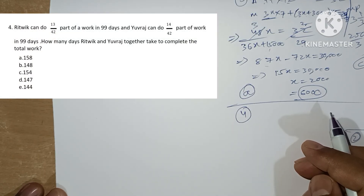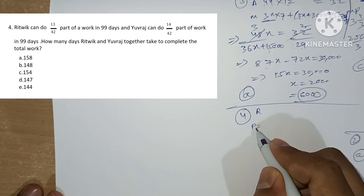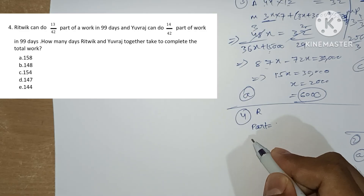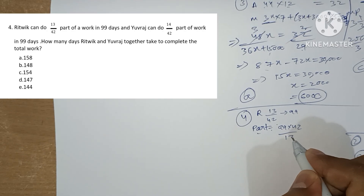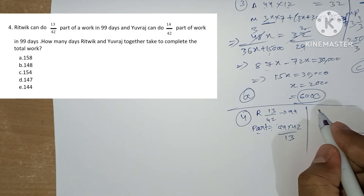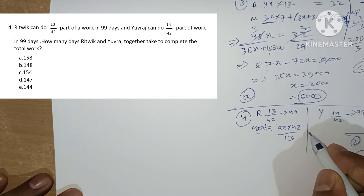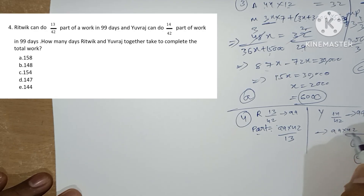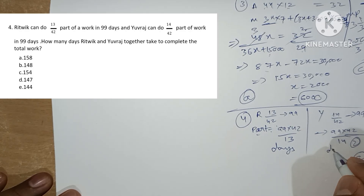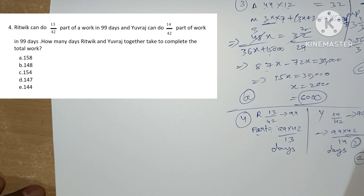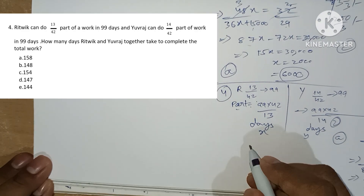Fourth question: Rithvik can do 13/42 part of work in 99 days, so Rithvik takes 99 × 42/13 days to complete the full work. Yoraz can complete 14/42 part of work in 99 days, so Yoraz takes 99 × 42/14 days. The question asks how many days Rithvik and Yoraz together can complete the work.